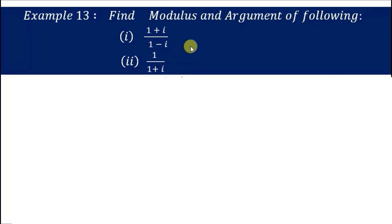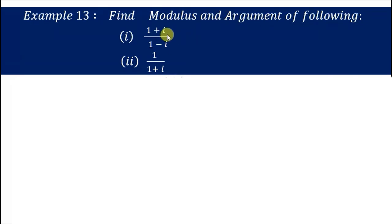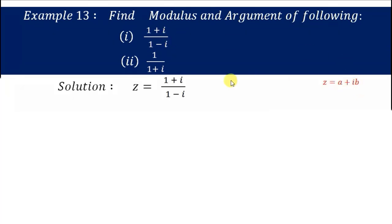The steps here are the same as that of the polar form. We have to find the modulus and the argument as in the polar form. For that we need to convert the given complex number into standard form, that is a plus ib form. To convert into a plus ib form, let us rationalize.